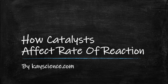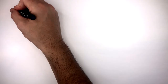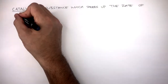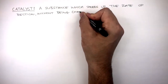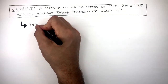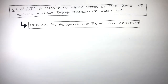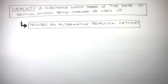A catalyst is a substance which speeds up the rate of reaction without being changed or used up. Catalysts provide an alternative reaction pathway, which means rather than the reactants using a pathway where more energy is required to start the reaction, the catalyst provides an alternative reaction pathway which requires less energy, so the activation energy is lower.